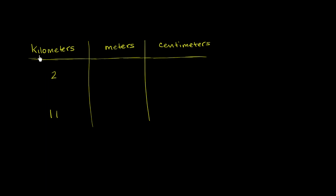Well, the one thing that we know is that a kilometer literally means 1,000 meters. So you could literally view this as 2 times 1,000 meters. Let me write that down. So this is going to be equal to 2 times 1,000 meters, which is equal to 2,000 meters.